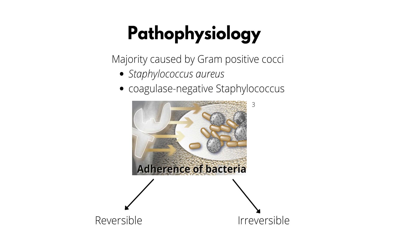So how does periprosthetic joint infection happen? Reversible and non-reversible attachment occurs when bacteria adhere to the implant. There is cell-to-cell adhesion between the microorganisms and the artificial surface. The non-specific characteristics of the bacteria, the biomaterial, and the surrounding joint fluid play a role in reversible attachment. Non-reversible attachment is influenced by specific receptors and structures.